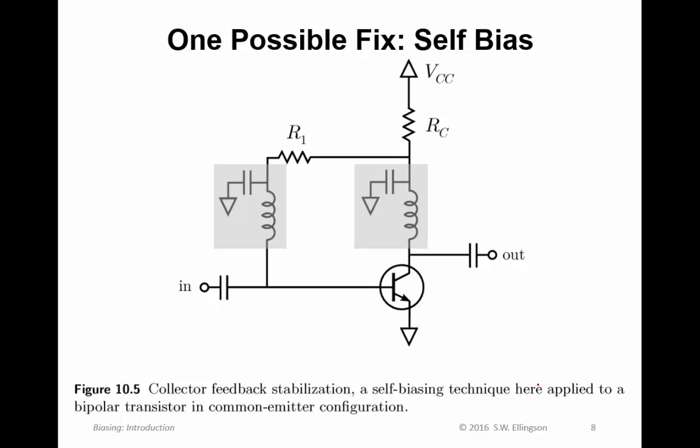One possible fix, not the only one, is to use a technique known as self-bias. Here's the new circuit for self-bias. The only thing that's changed here is that the source of the base current, I sub B, is now coming from the collector path. Whereas previously, this base current was coming directly from the power supply. This simple change will do a lot to mitigate the effect of beta and temperature instability. This technique also goes by the name of collector feedback stabilization, just so you know. Self-bias is a somewhat general idea. Collector feedback stabilization is what this is sometimes called when it's applied specifically to bipolar transistors. This is the topic of a future lecture.